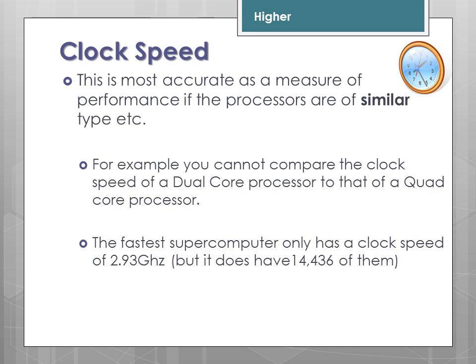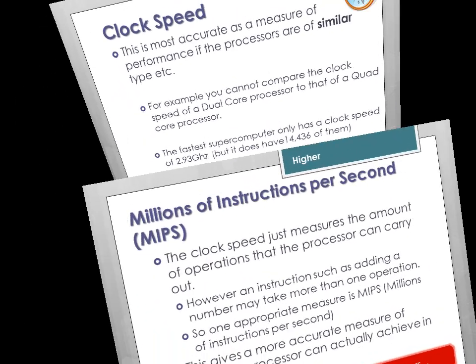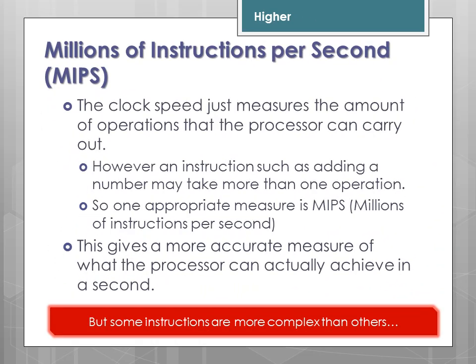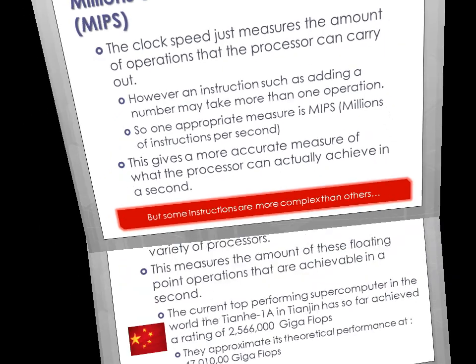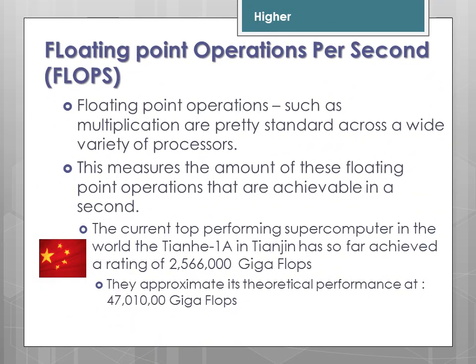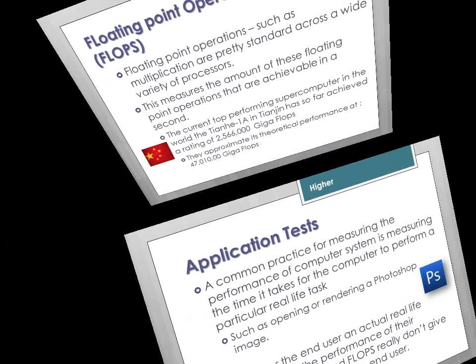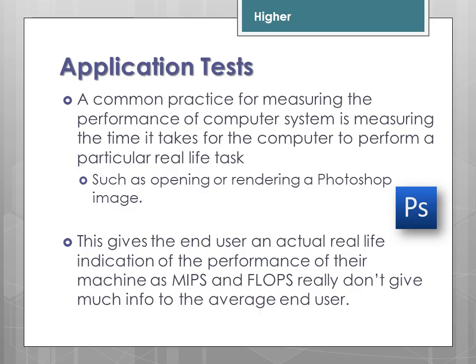You can only compare the clock speed of similar processors. MIPS stands for millions of instructions per second. Another measure is floating point operations per second, known as FLOPs. These are pretty application-based tests and are known as real-world tests.